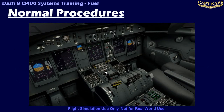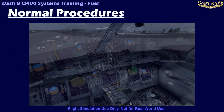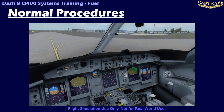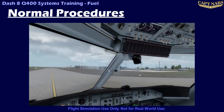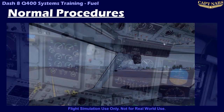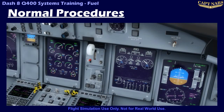During normal use of the fuel system, there are very few actions to perform. The tank aux pumps must be selected on prior to takeoff and landing, and selected off again afterwards. Additionally, the fuel quantity should be periodically monitored throughout the flight, and fuel transfers conducted whenever appropriate.